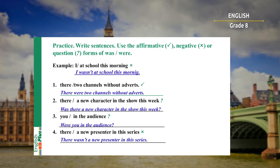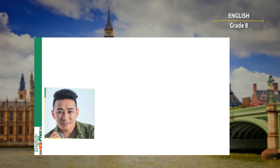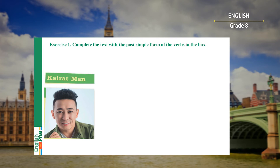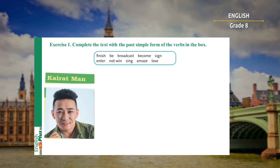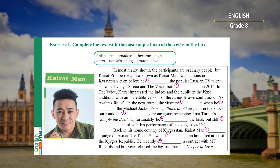Well done, good job! Now look please at this gentleman. Do you know him? Of course you do – he is known as Carrot Man. Now please complete the text with the past simple form of the verbs in the box: finish, be, broadcast, become, sing, enter, not win, sing, amaze, love. This text is about Carrot Man. You have three minutes.